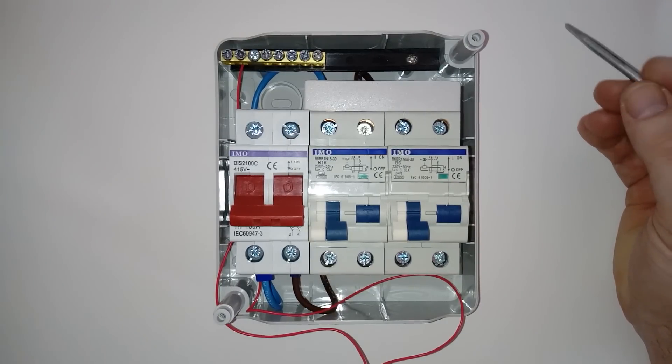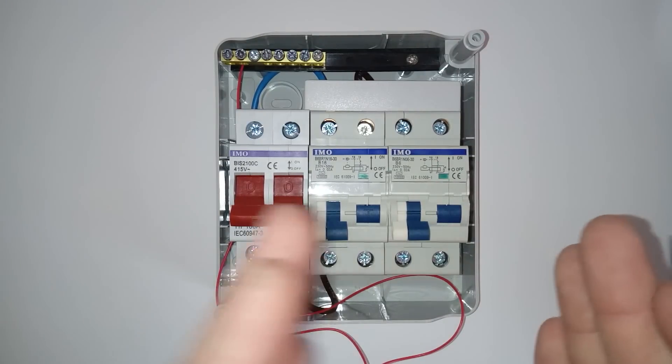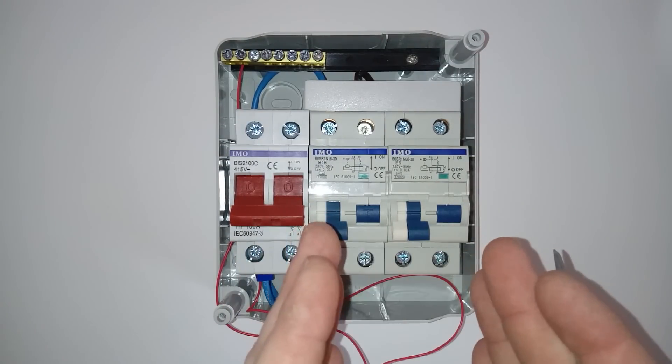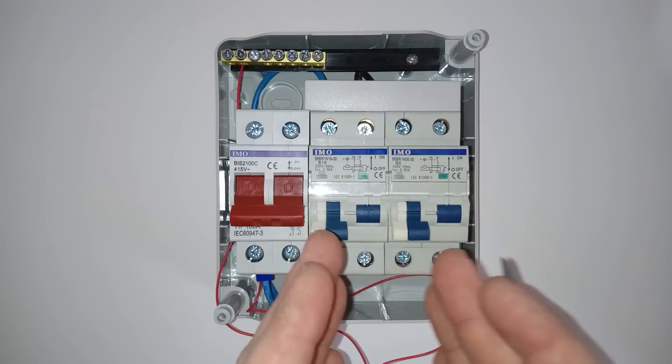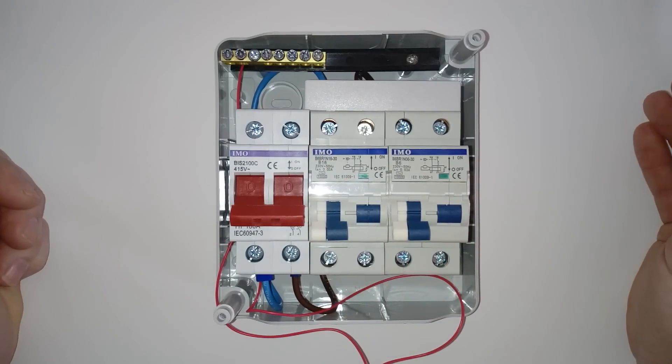you might have a microwave in there, you've got a fridge, whatever else you're running that's on 240, try and distribute them evenly over the breakers. Because you don't want to overload one more than the other, you're just going to get it where it's going to be tripping out.